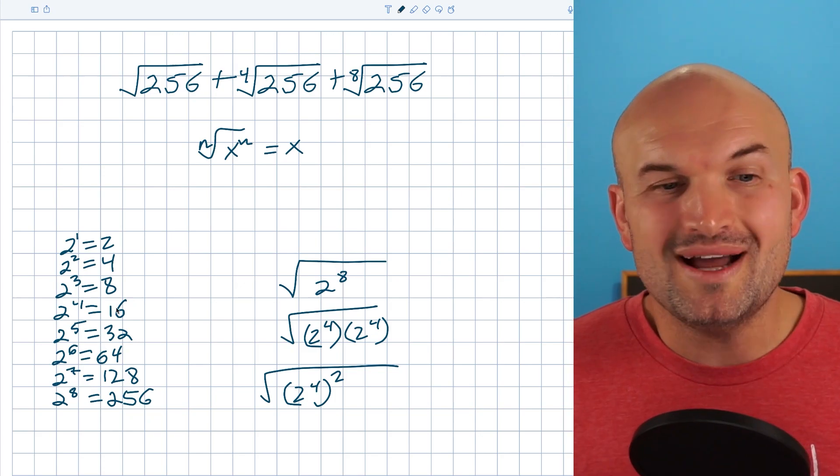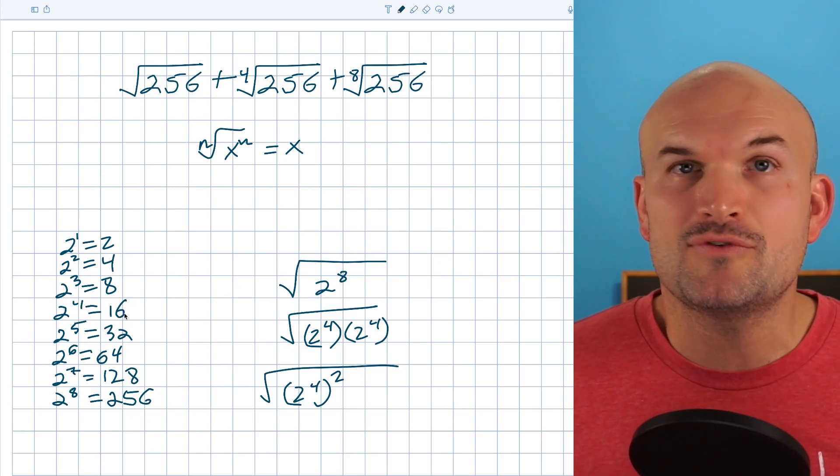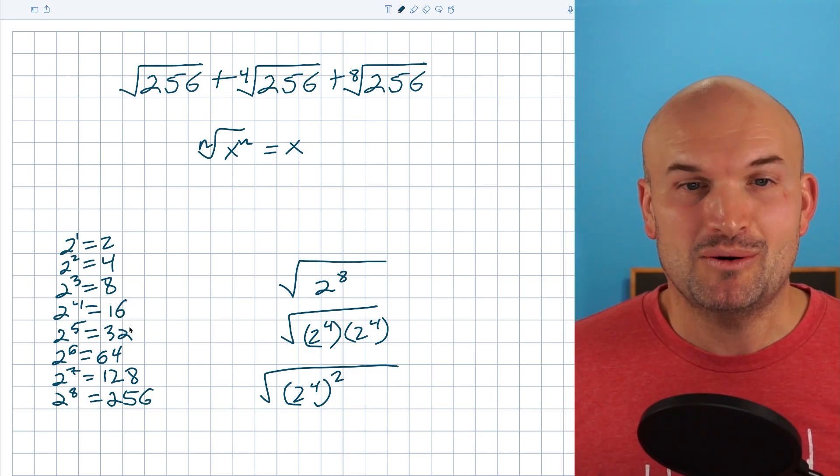Now, again, going back to our understanding here, what is two to the fourth? Well, two to the fourth is equal to 16. That's exactly what we're looking for.